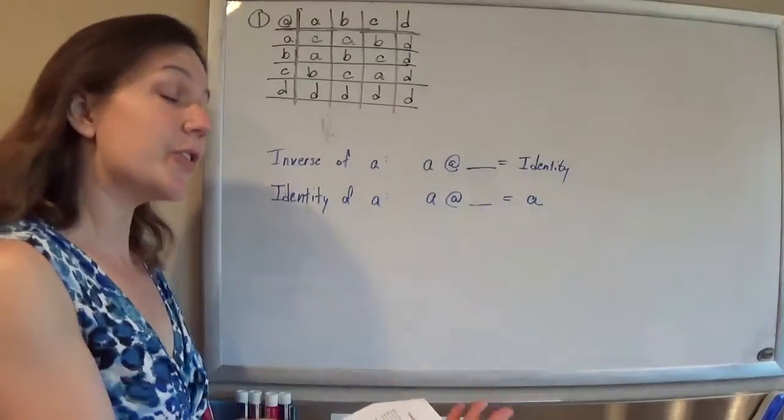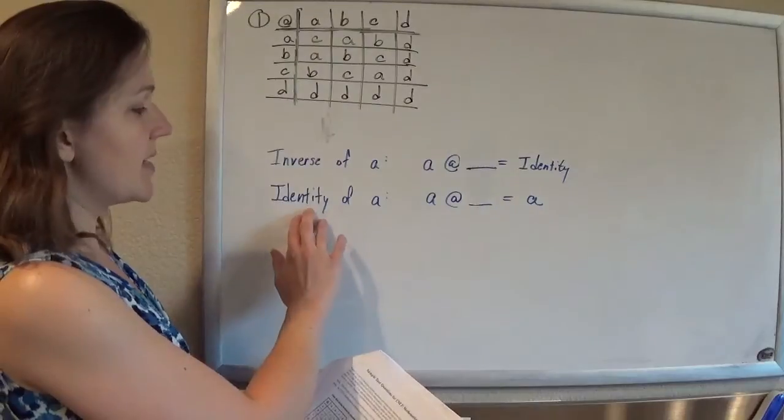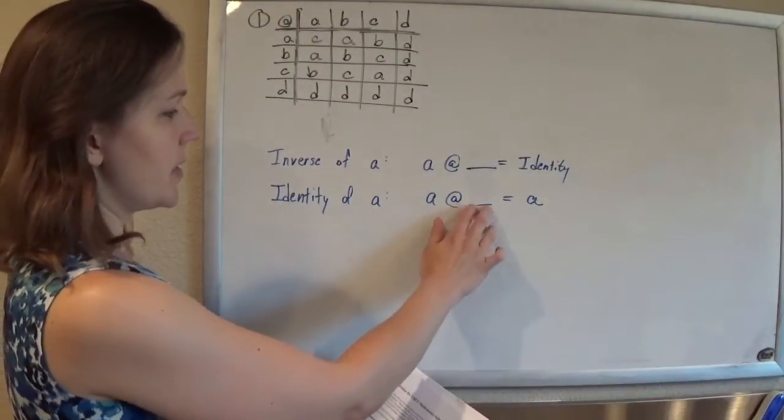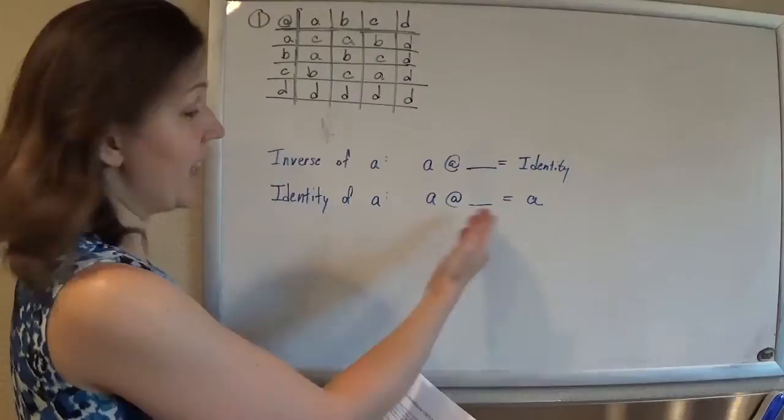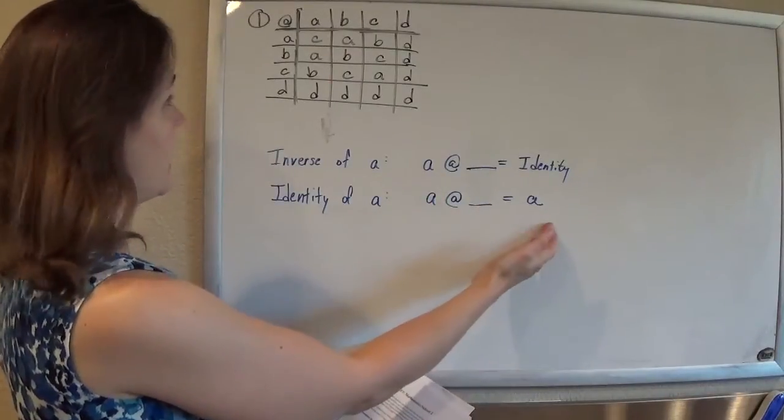So that means that first, we need to find the identity. And by definition, the identity of A is the element that we can combine A with. What can we do to A so that it maintains its identity? What can we do to A so that it stays A?